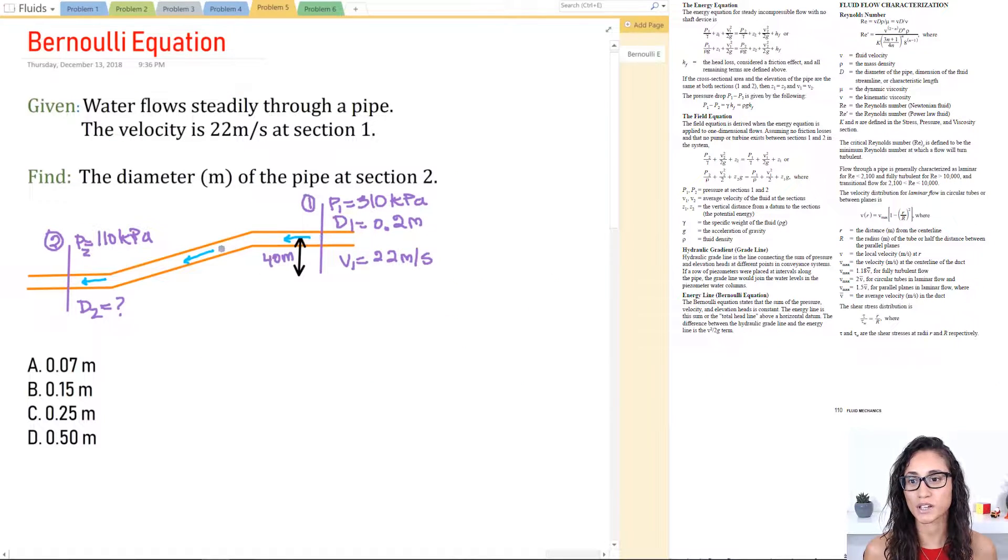Okay guys, so we have water that flows steadily through this pipe and the velocity at this point is 22 meters per second. The pressure is 310 kilopascal, which is the same as kilonewtons per meter squared. The diameter at this point is 0.2 meters.